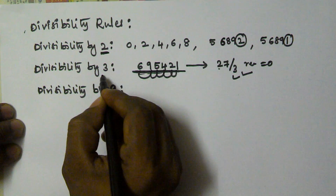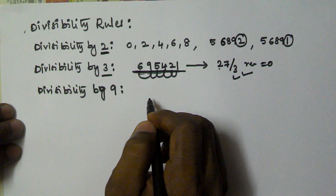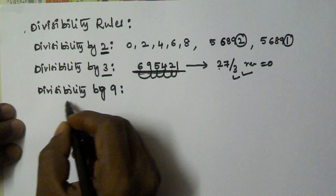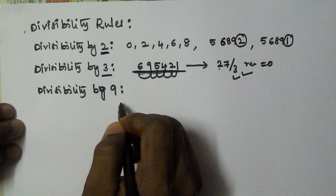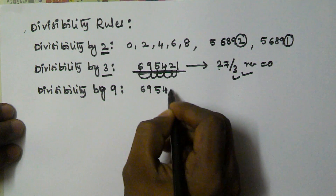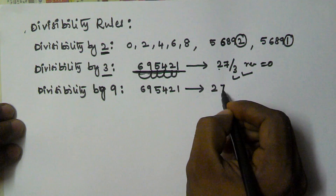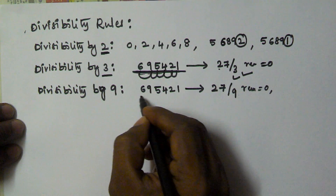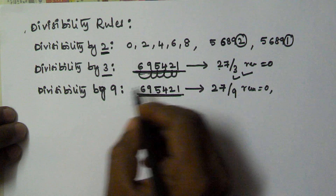Now let's see divisibility by 9. This is also similar to divisibility by 3. If the sum of digits of a given number is divisible by 9, then that number is also divisible by 9. Taking the same number 695421, the sum of its digits is 27. Since 27 is divisible by 9 with remainder 0, this number is divisible by 9.